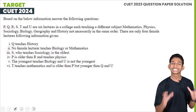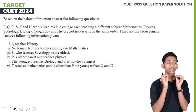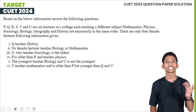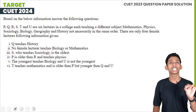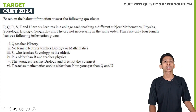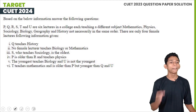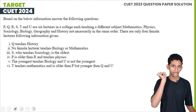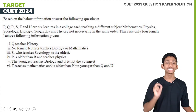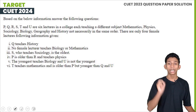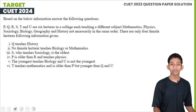Next question. P, Q, R, S, T, and U are six lecturers in a college, each teaching a different subject: Mathematics, Physics, Sociology, Biology, Geography, and History — not necessarily in the same order. I will answer the set of questions based on the given information.